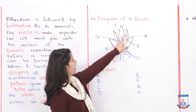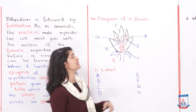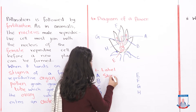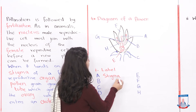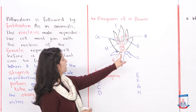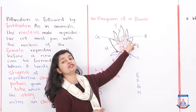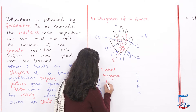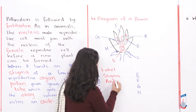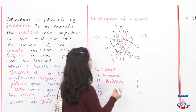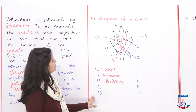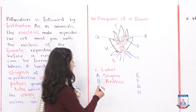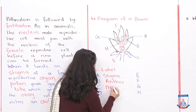First, A is the stigma — where your pollen lands. Label A as stigma. Then look at B: that little filament part is the anther, so label B as anther. Part C is associated with the nectary — part C is the nectary.